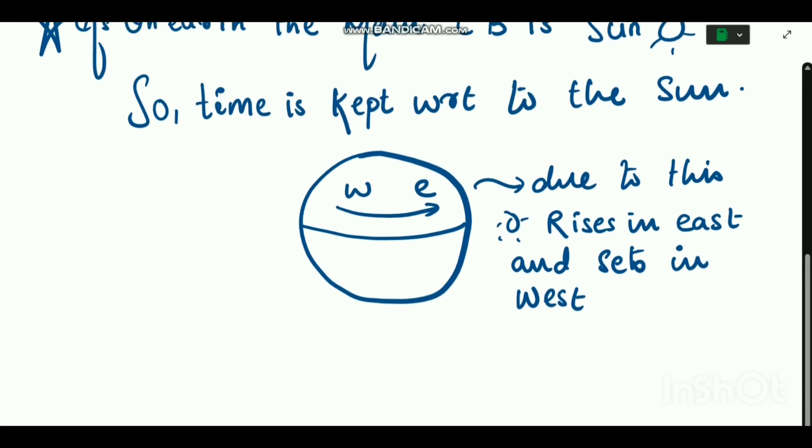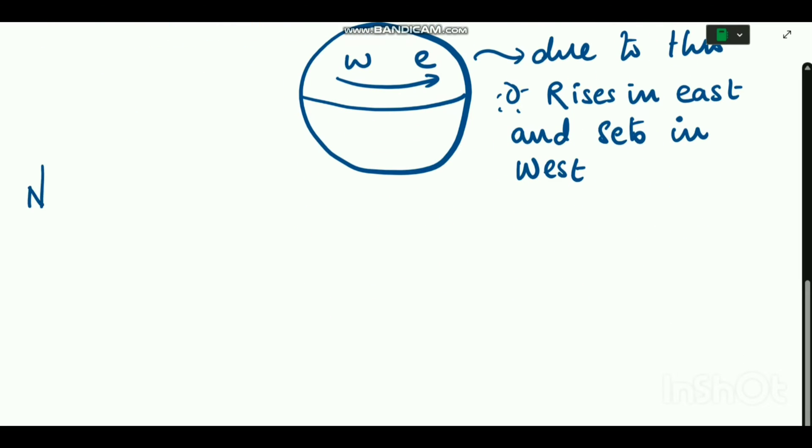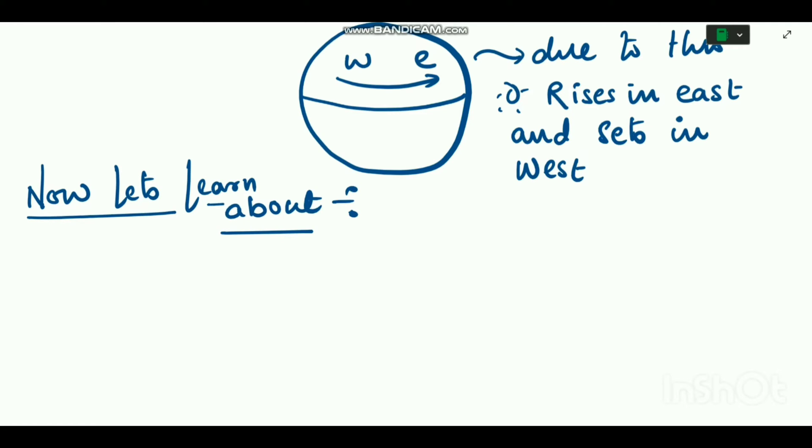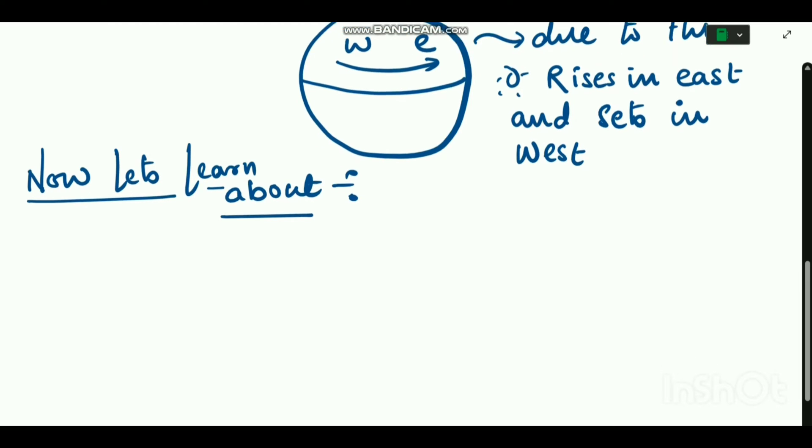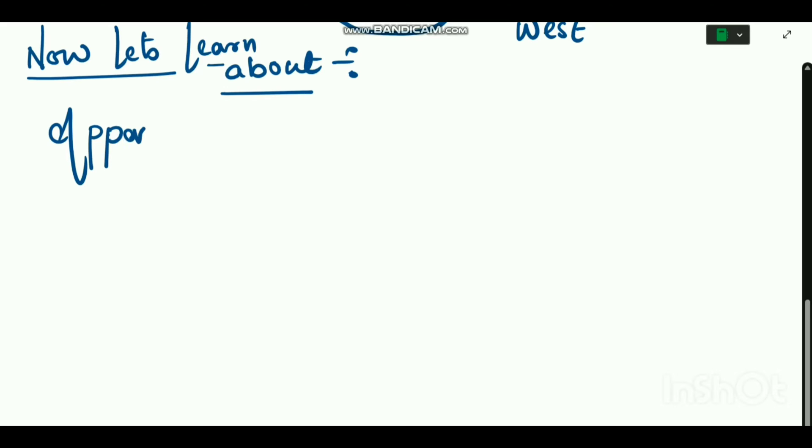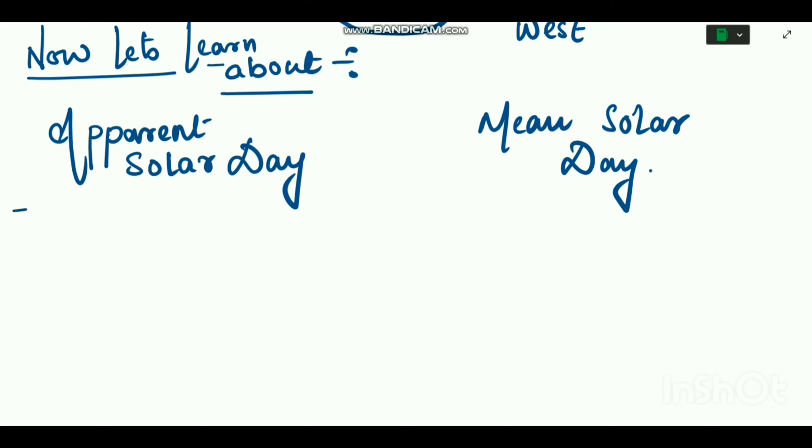As you can see in this picture, now let's discuss the difference between apparent solar day and mean solar day. This is a very important concept that you need to remember. Apparent solar day is the interval in time between two successive transits of true Sun.